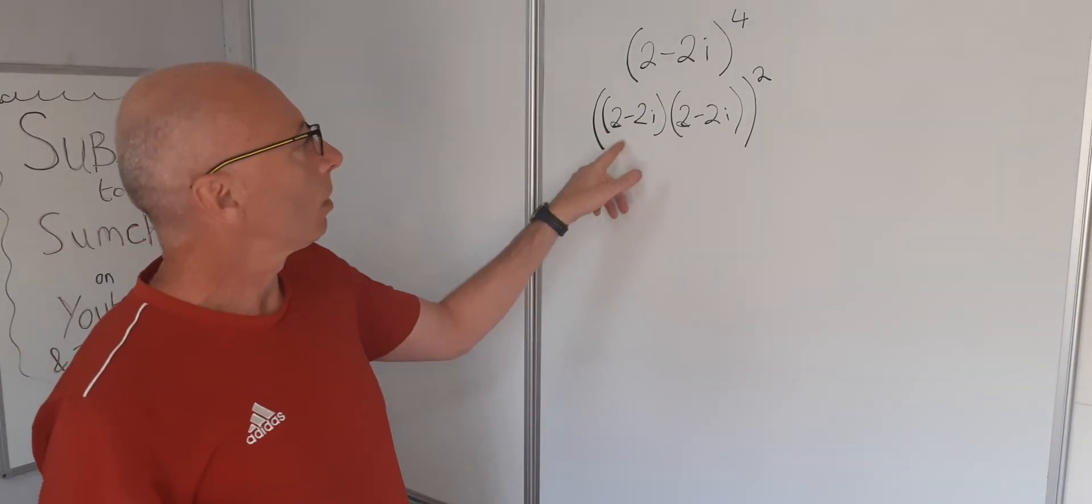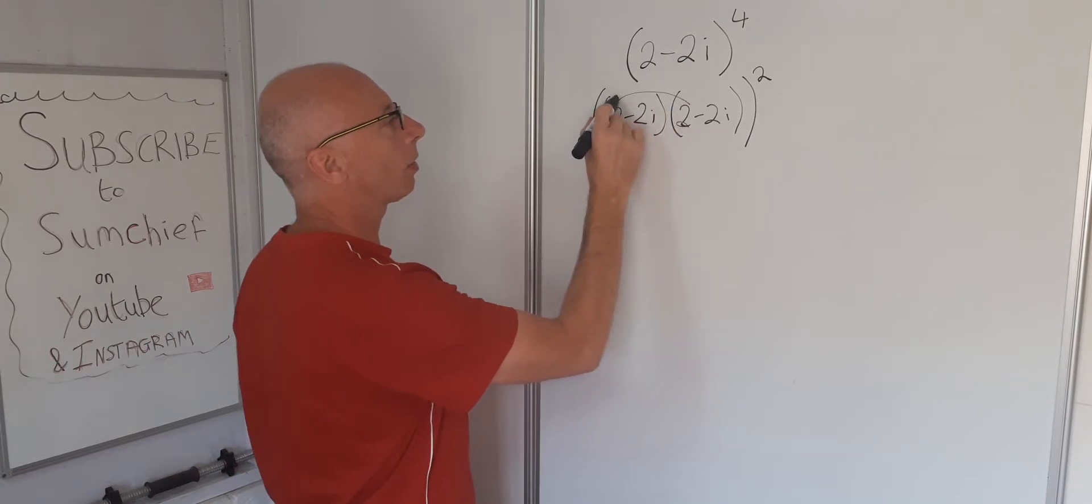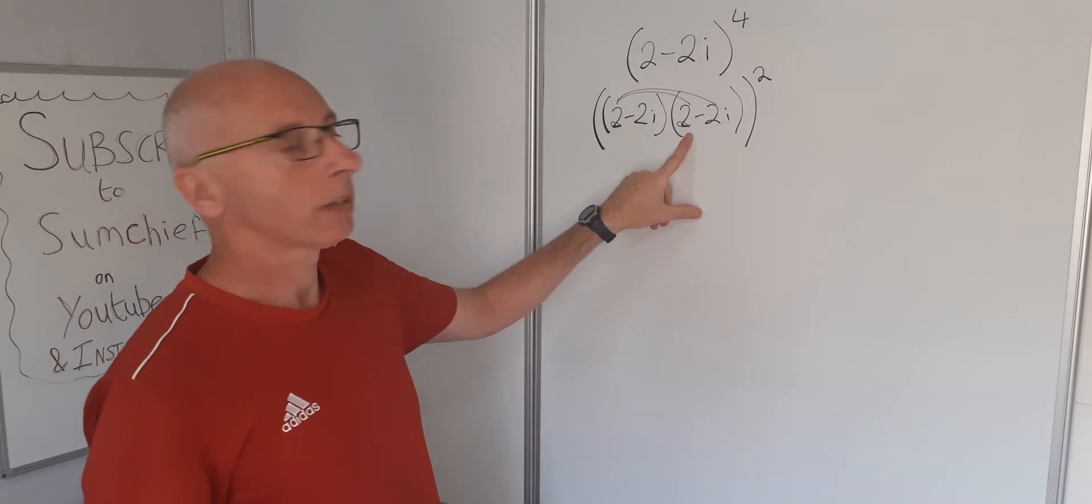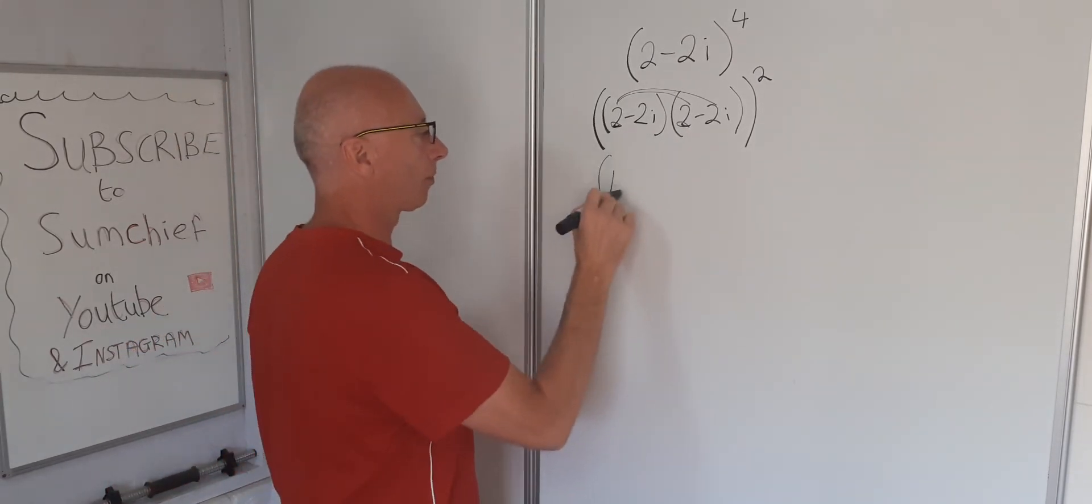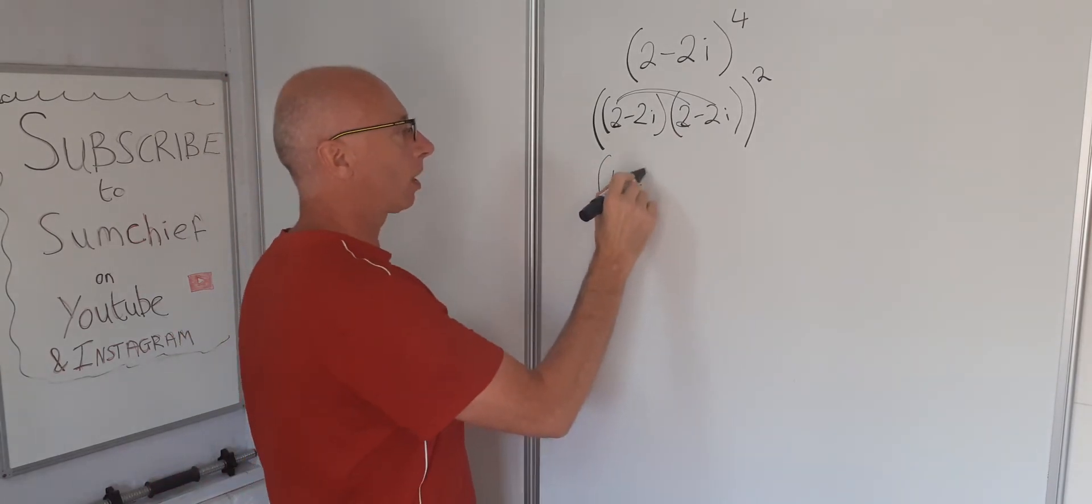So let's go that way. What we can do is foil these out and see what we get. So we go with that one with that one and that one with that one. 2 times 2, that's going to give us 4. 2 times minus 2i, that's minus 4i.